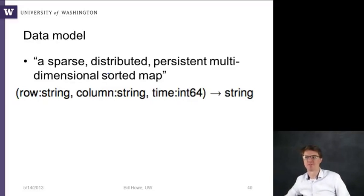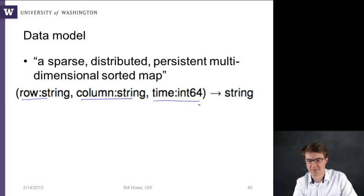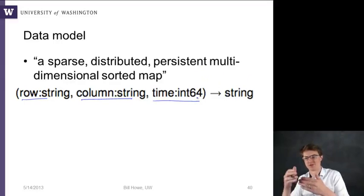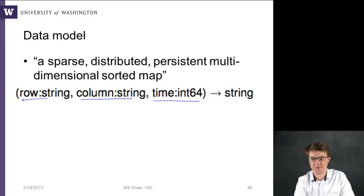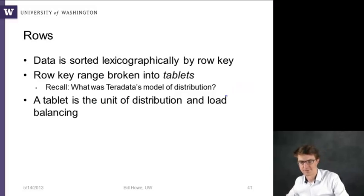So the data model here is a sparse, distributed, persistent, multi-dimensional sorted map. And what they mean here is that you can basically access any cell in a Bigtable by giving a row ID, a column name, and a timestamp. Timestamp isn't really described in this English description here. It's for versioning. So when you have, after you have updates, you'll keep track of past versions of the same cell. And so if you provide these three parameters, Bigtable will return you a string quickly.